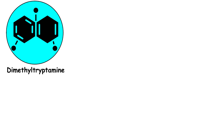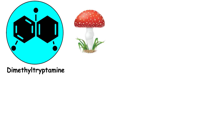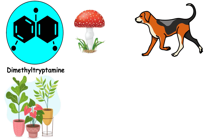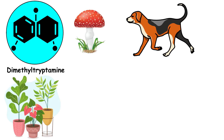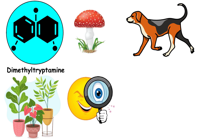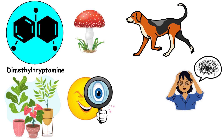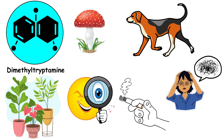DMT, or dimethyltryptamine, is a powerful hallucinogenic compound found naturally in certain plants and animals. It can induce profound spiritual experiences, visual and auditory hallucinations, and altered states of consciousness when ingested or smoked.